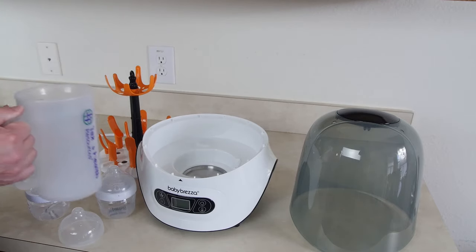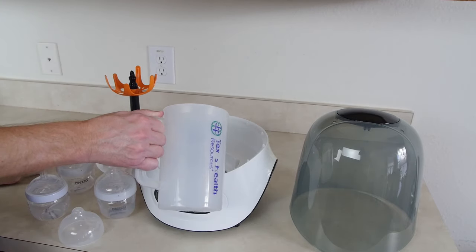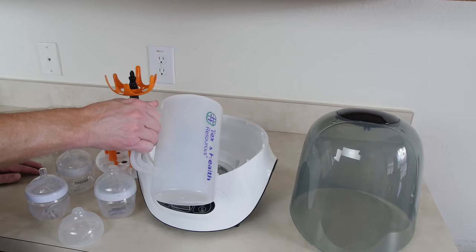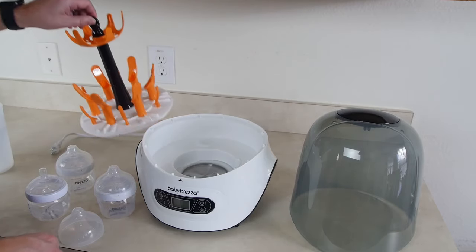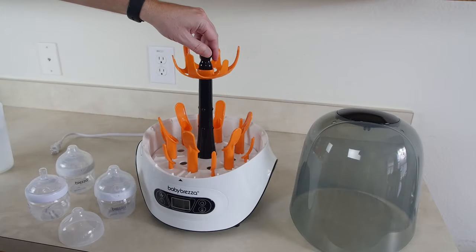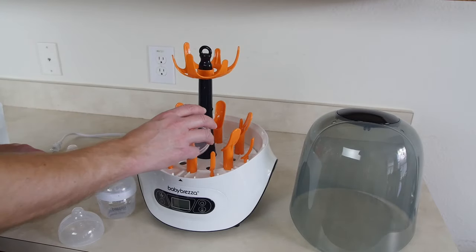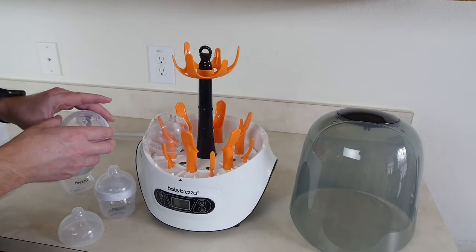Let's start off by first adding water. We're going to add this to just that max fill line right about there. We're going to go ahead and set the accessory rack here. Looks like maybe that just sits in there.